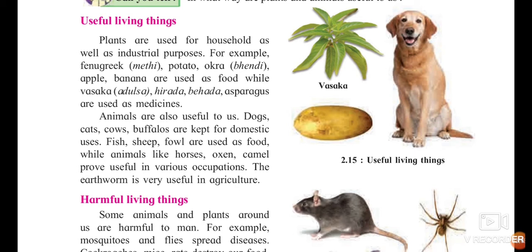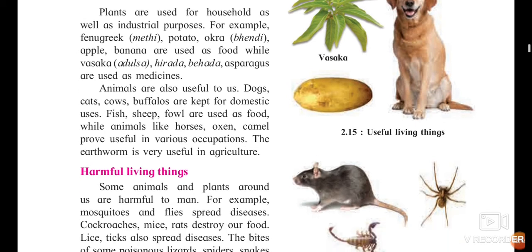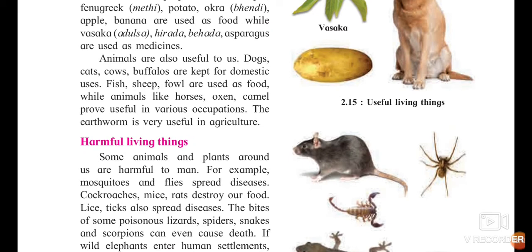Animals like horses, oxen, and camels prove useful in various occupations. Horses and oxen are used to carry burdens from one place to another. Camels do the same in deserts. Oxen are also useful in agriculture. These are the useful living things.